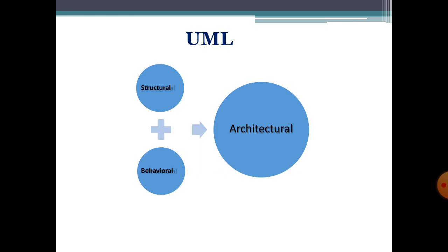In layman's words, structural diagrams represent the static view, which emphasizes the static structure of the system using objects, attributes, operations, and relationships. On the other hand, behavioral diagrams emphasize the dynamic behavior of the system by showing collaboration among objects and changes to the internal state of objects. So the static view emphasizes system structure using objects, attributes, operations, and relationships, while the dynamic view shows how different objects collaborate and how the state of objects changes.